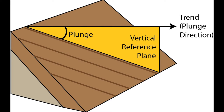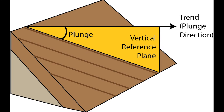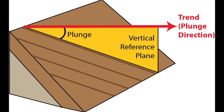A complete lineation measurement consists of two parts: trend and plunge. With lineation measurements, the vertical reference plane passing through the lineation is really important. Even though we usually say trend and plunge, let's talk about plunge first. Plunge is similar to dip in that it is the vertical angle between the lineation and a horizontal line. A horizontal lineation has 0 degrees plunge, and a vertical lineation has 90 degrees plunge. Trend is the directional bearing of the vertical plane that passes through the lineation — in other words, trend is the same thing as plunge direction.